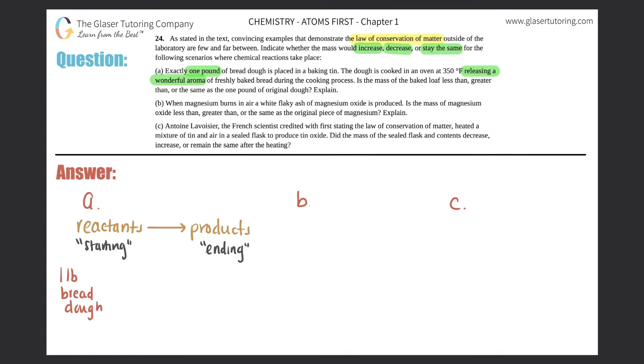The dough is cooked in an oven at 350 degrees Fahrenheit, releasing a wonderful aroma of freshly baked bread during the cooking process. Is the mass of the baked loaf less than, greater than, or the same as the one pound of original dough? We can always write this as a products and reactants type of equation. Reactants is what you always start off with, and it always turns into the products.